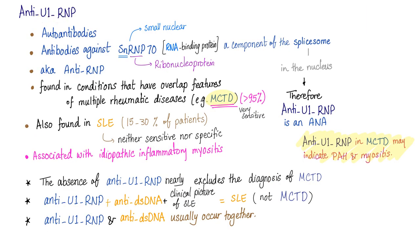Anti-U1 RNP is present in more than 95% of patients with mixed connective tissue disease — therefore it's very, very sensitive. But it's not specific, because you can find it in mixed connective tissue disease as well as lupus. Rheumatology is all about pattern recognition: if you have a clinical picture of lupus, positive anti-double-stranded DNA, and positive anti-U1 RNP, don't say mixed connective tissue disease — it's clearly lupus.